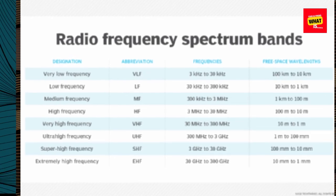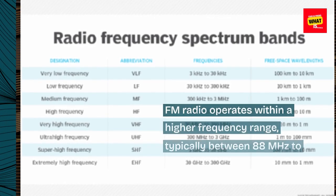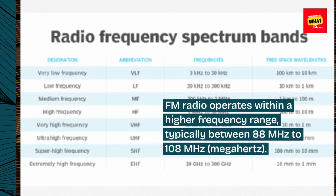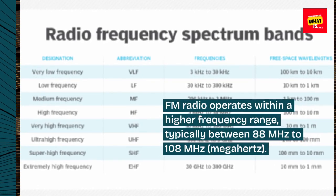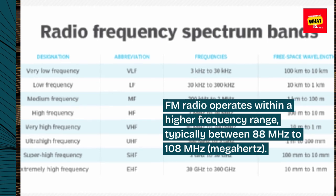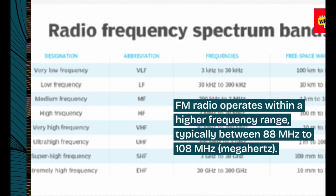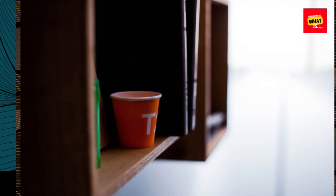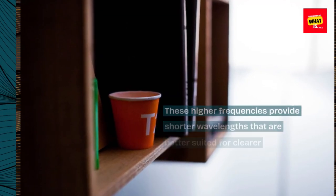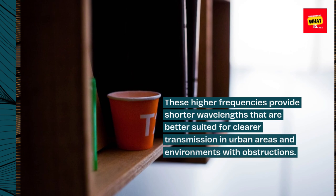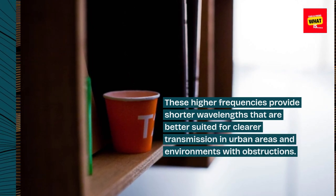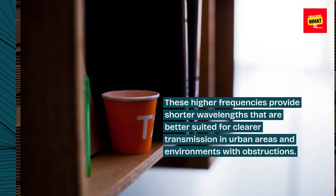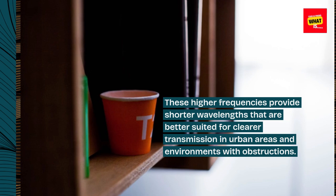FM radio operates within a higher frequency range, typically between 88 MHz to 108 MHz. These higher frequencies provide shorter wavelengths that are better suited for clearer transmission in urban areas and environments with obstructions.